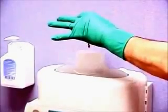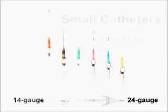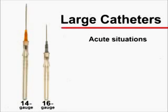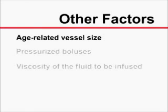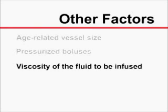Needles should always be discarded appropriately in a sharps container. The size of the catheter selected will depend on the clinical situation. The smallest effective catheter should be used, as small catheters allow for less resistance to blood flow around the cannula and are associated with fewer complications. Large catheters, such as 14 and 16 gauge, are used in acute situations for fluid resuscitation — for example, in managing hypovolemia in a trauma patient or a patient with severe dehydration. Other factors influencing catheter size include age-related vessel size, the need for pressurized boluses for contrast or medication, and the viscosity of the fluid to be infused.